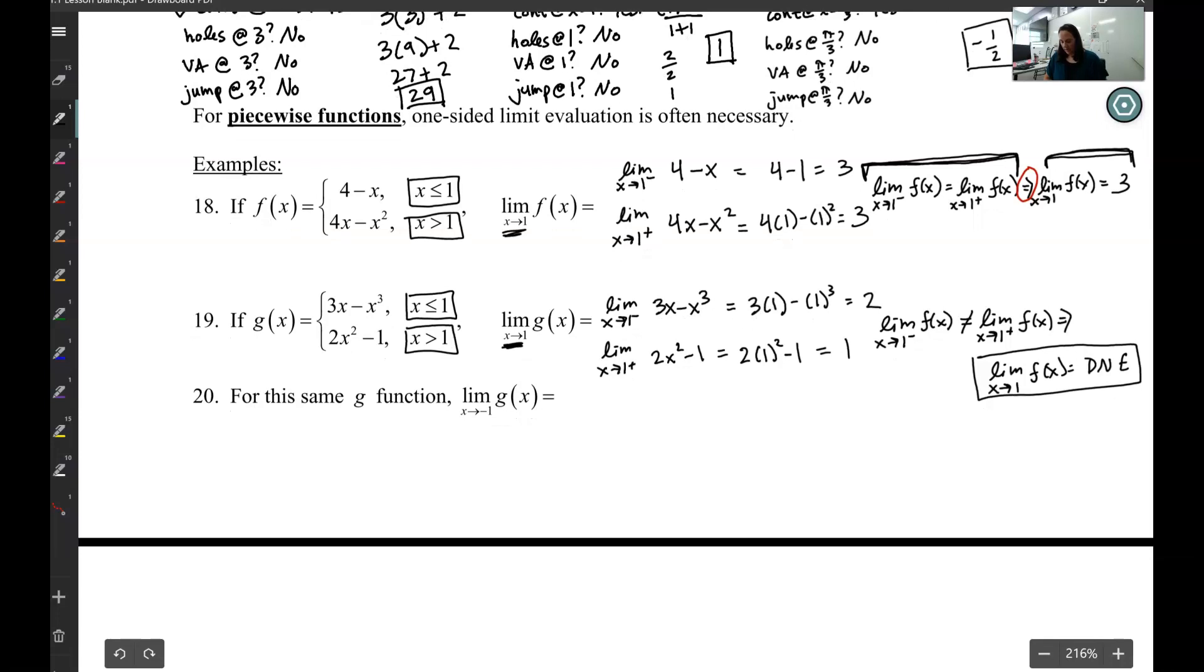Now let's ask this question: as x approaches negative 1 of g(x). If I look at this one, if I want as x approaches negative 1, well that would be this one because that is when x is less than or equal to 1, and negative 1 is less than or equal to 1.